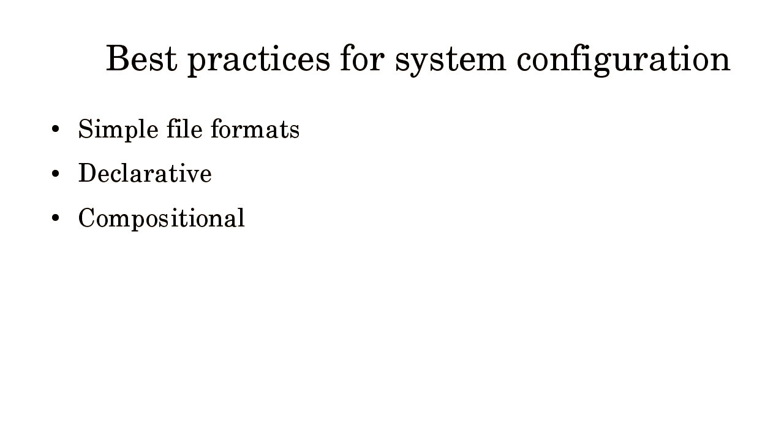I'm going to be talking about type-driven configuration management with Propeller. So what are the best practices for system configuration these days? Config files should be in some kind of simple file format, like an INI file — some kind of declarative format. Systemd switched to declarative format for all kinds of init scripts, and people generally think that's a good idea. And we configure systems often by composing different pieces together into one unified thing.